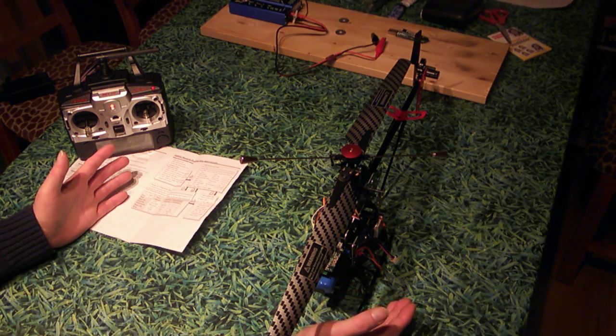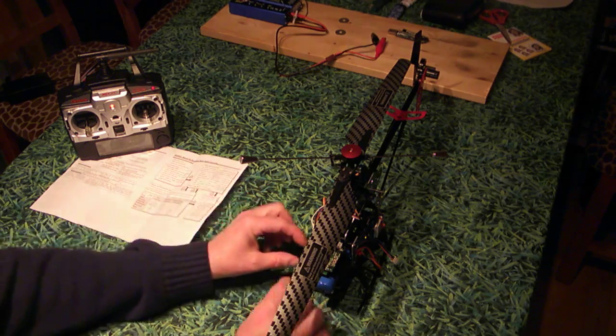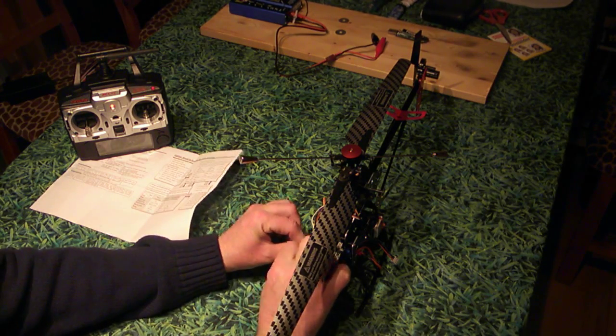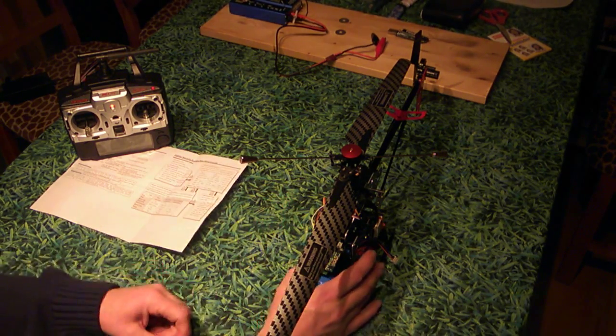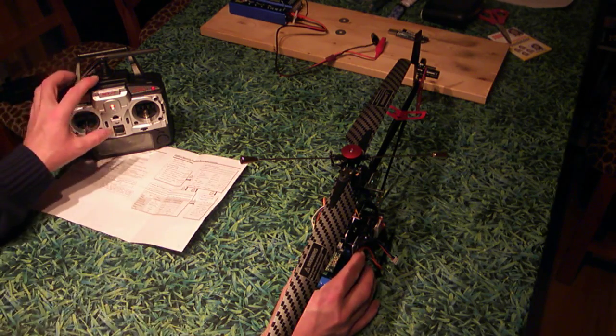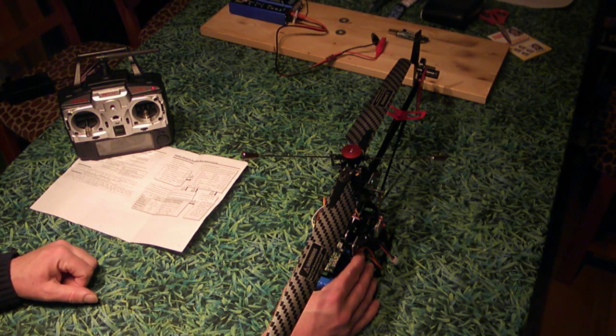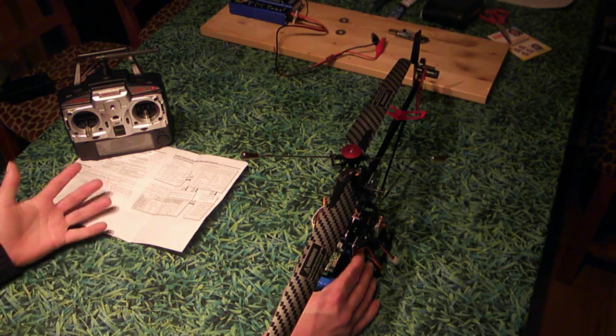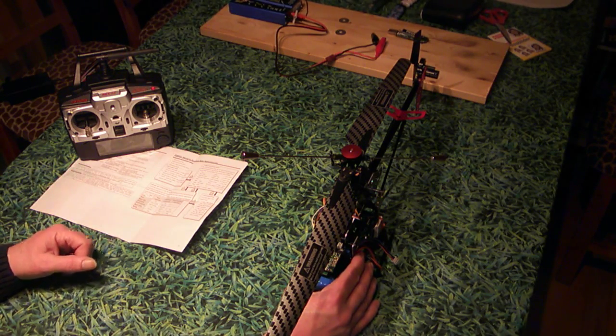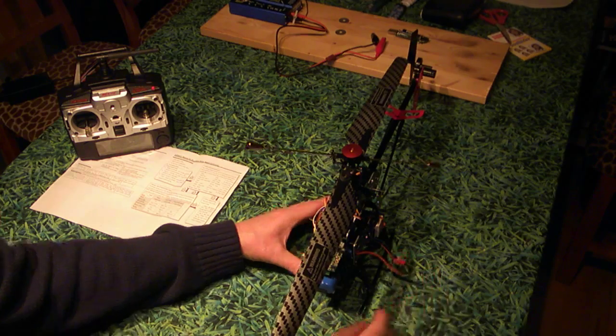Now when you're turning everything off again, you want to disconnect the red power lead on the ESC, there we go. Now you can unplug the battery.